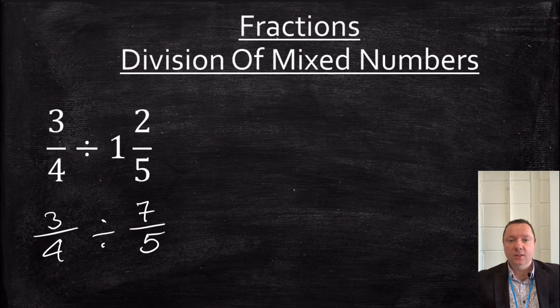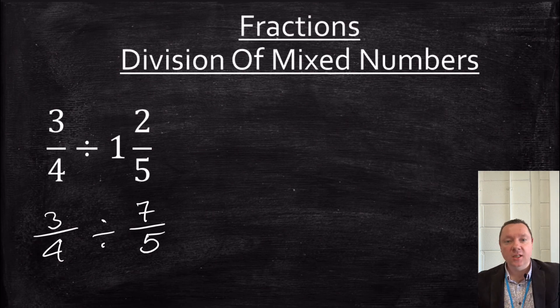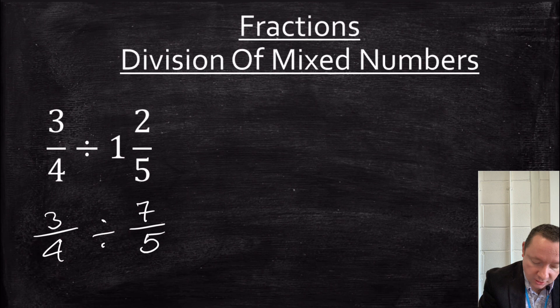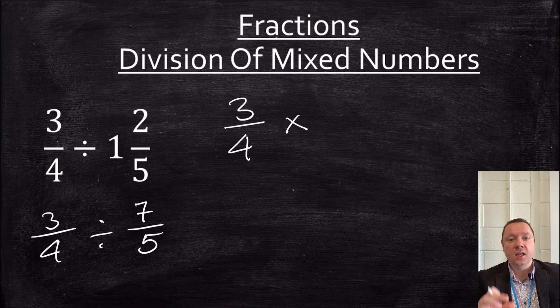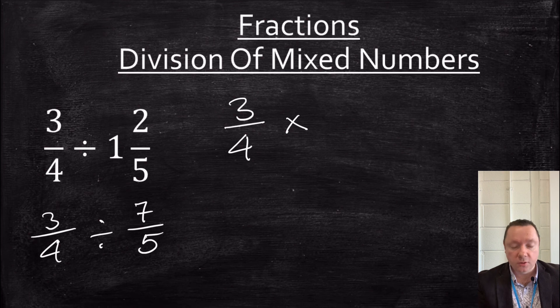Now, divide. To divide by a fraction is the same as multiplying by its reciprocal. What does that mean? Well, it just means you do 3 quarters, divide turns into times, and 7 fifths turns into 5 sevenths. It flips upside down, I suppose you could think of it. 5 sevenths.